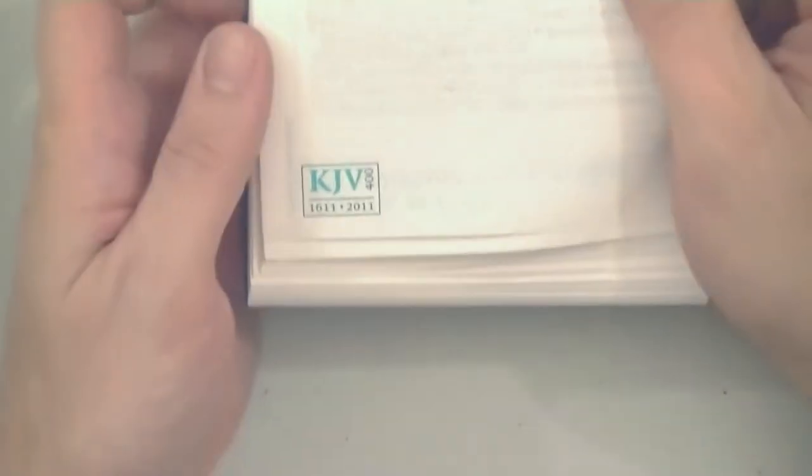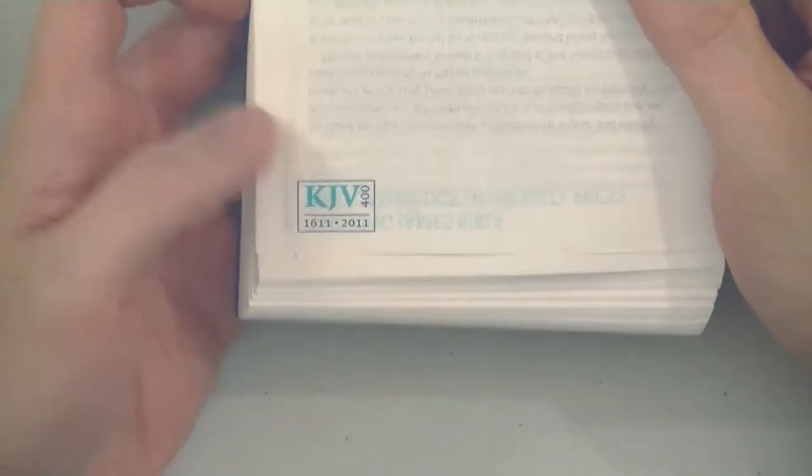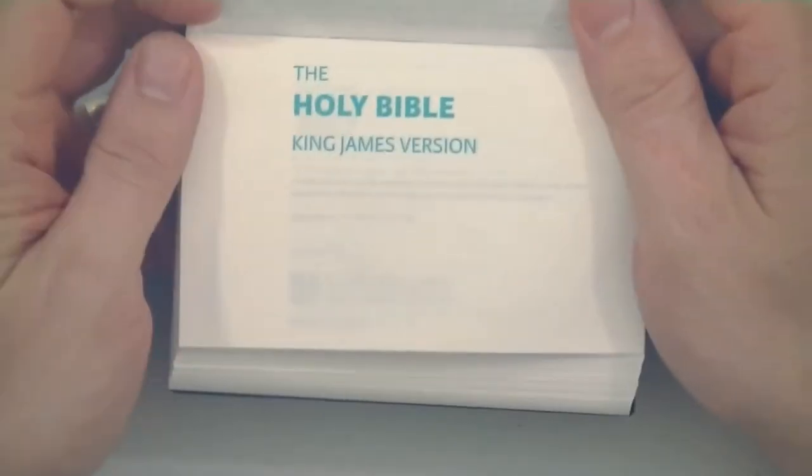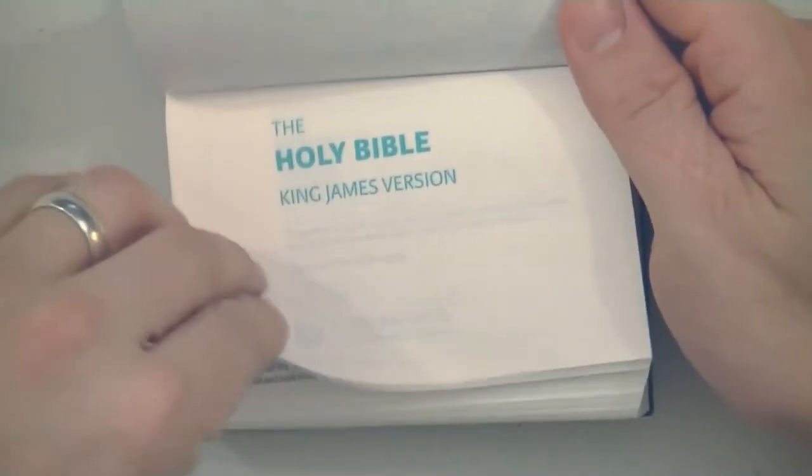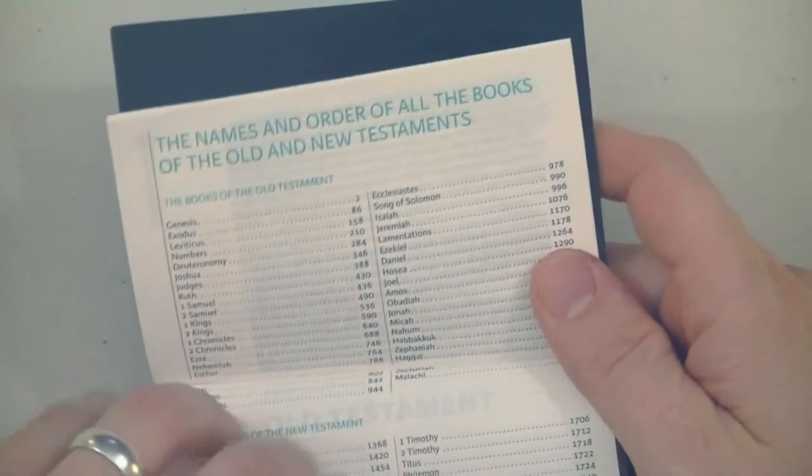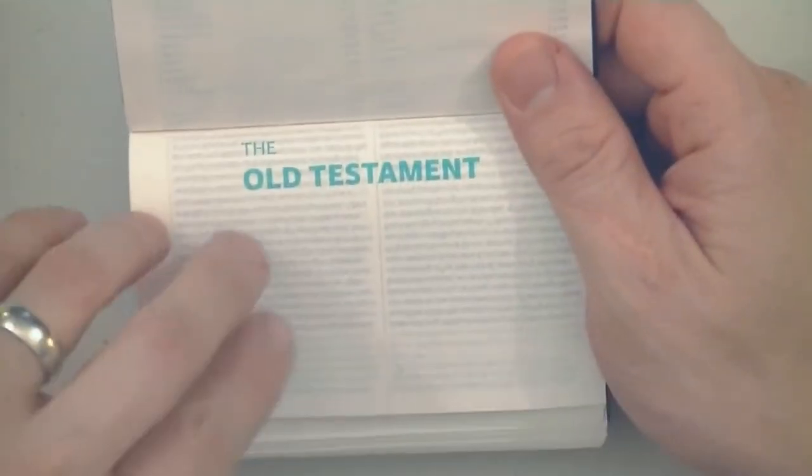Okay, here, I thought this was kind of neat. KJV 400, 1611 to 2011. But it goes in, Holy Bible, King James Version. Names in order of all the books of the Old and New Testament. The Old Testament. And then you go to...